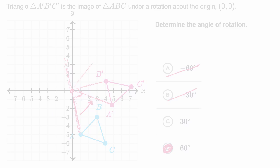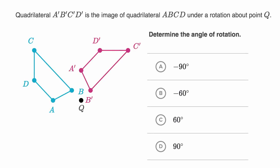Let's do another example. So we are told quadrilateral A prime, B prime, C prime, D prime, in red here, is the image of quadrilateral ABCD, in blue here, under rotation about point Q. Determine the angle of rotation. So once again, pause this video and see if you can figure it out.